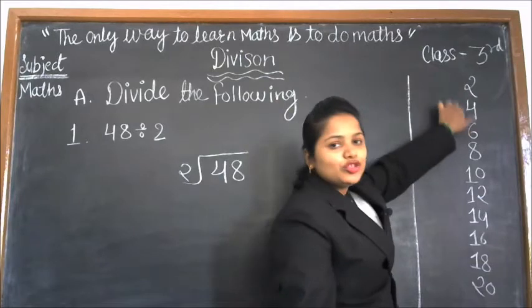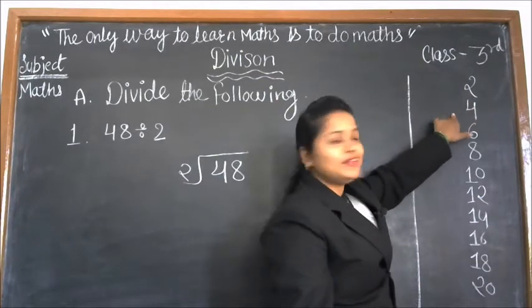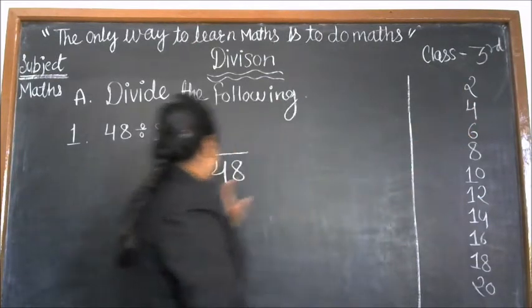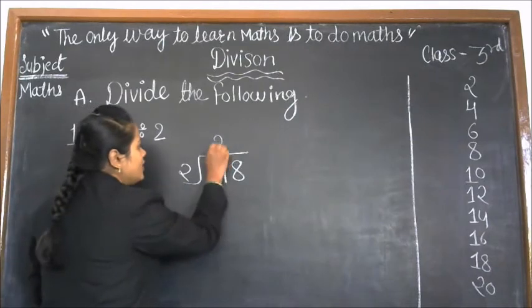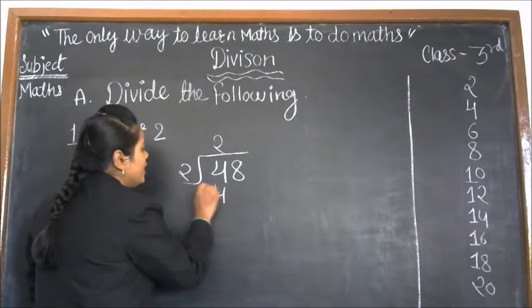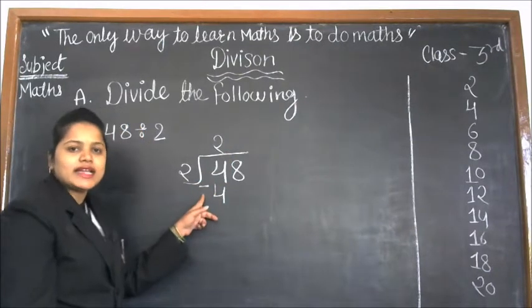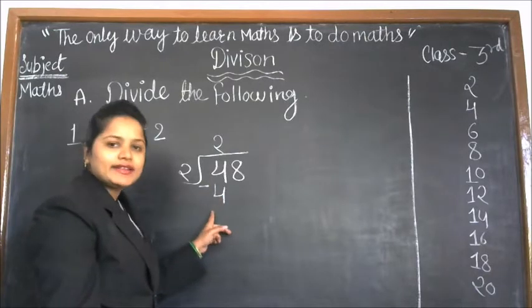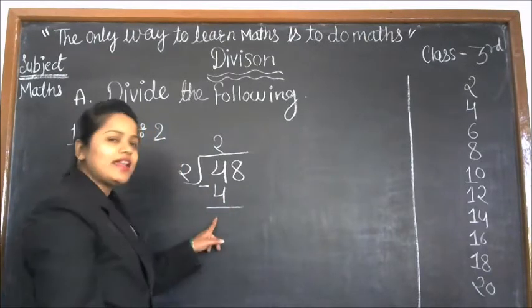So 2 times 1 is 2, 2 times 2 is 4. It means 2 twos are 4. Now we have a minus sign. Because we have minus, 4 minus 4.